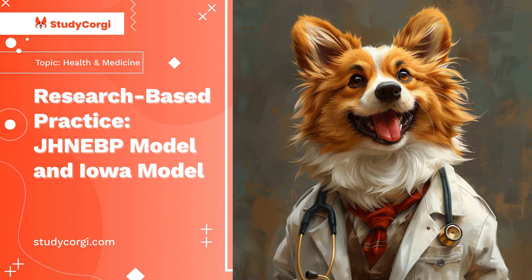In addition, the Iowa Model concept suggests that the implemented evidence-based knowledge should necessarily be relevant to the particular organizational context. Otherwise stated, it is considered critical to ensure the selected scientific theory can be applied to the environment. The JHNEBP concept, in its turn, suggests that the scientific evidence should be, first and foremost, relevant to the targeted problem. On the whole, however, both models are supposed to assist nurses in carrying out effective decision-making with the use of the latest research findings and valid theories.